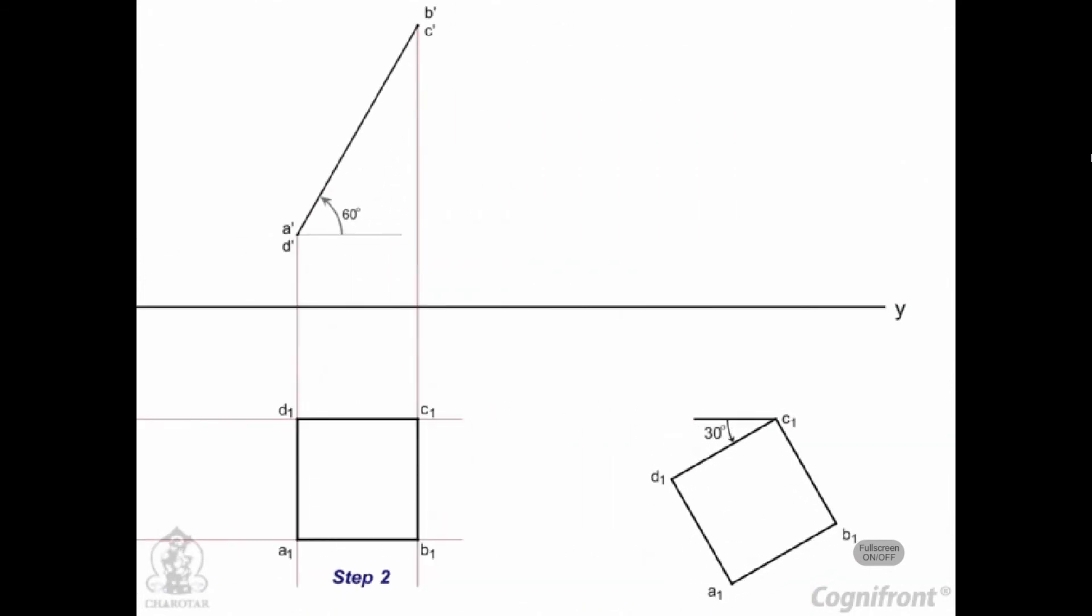Now, rotate the edge D1, C1 of the top view by 30 degrees, the angle of inclination of plane with VP, and reproduce it as shown.